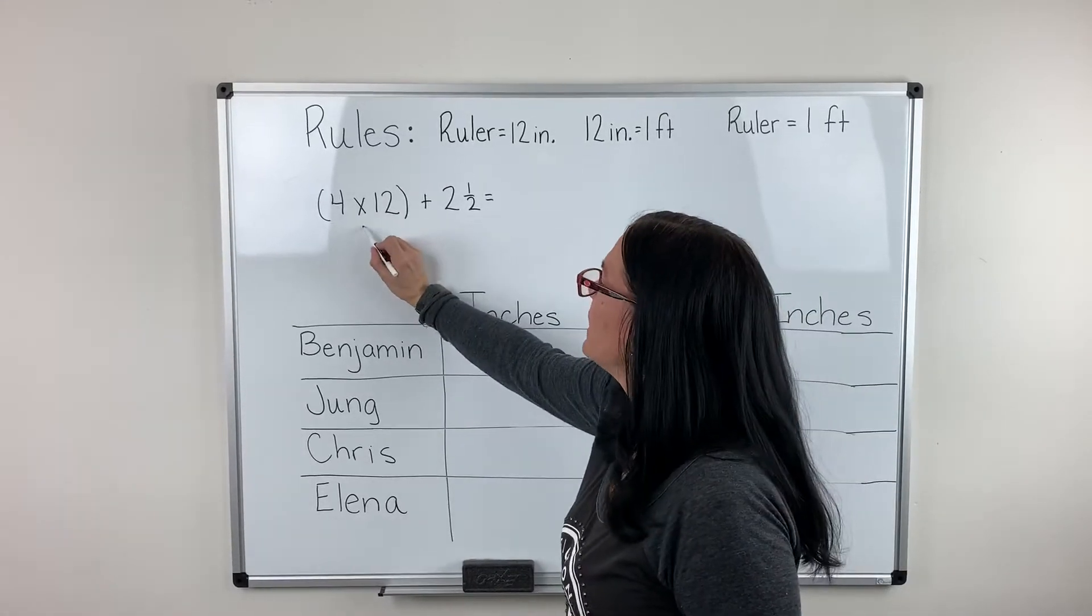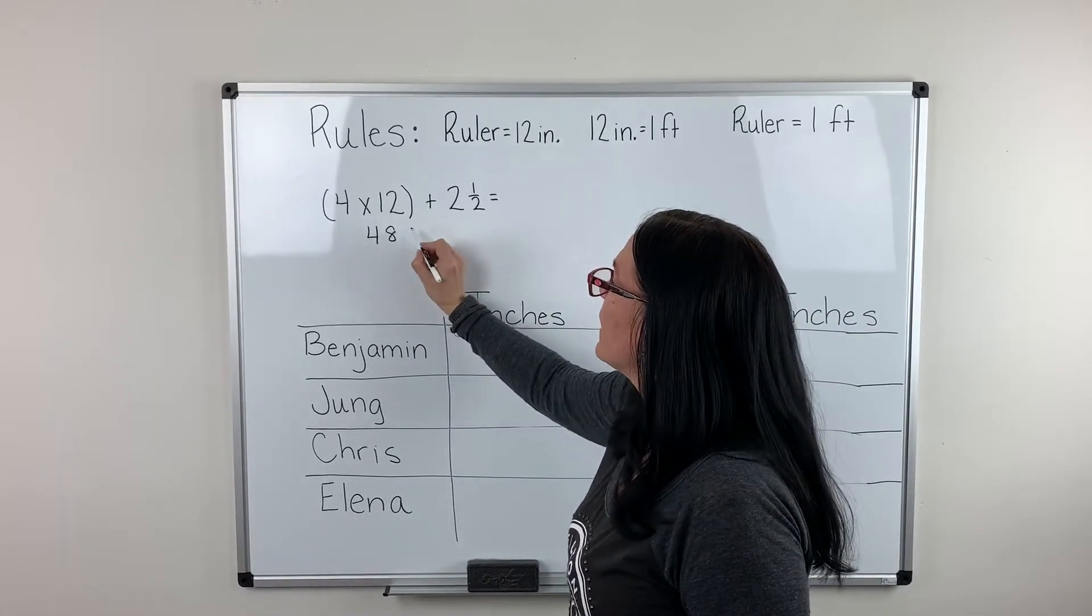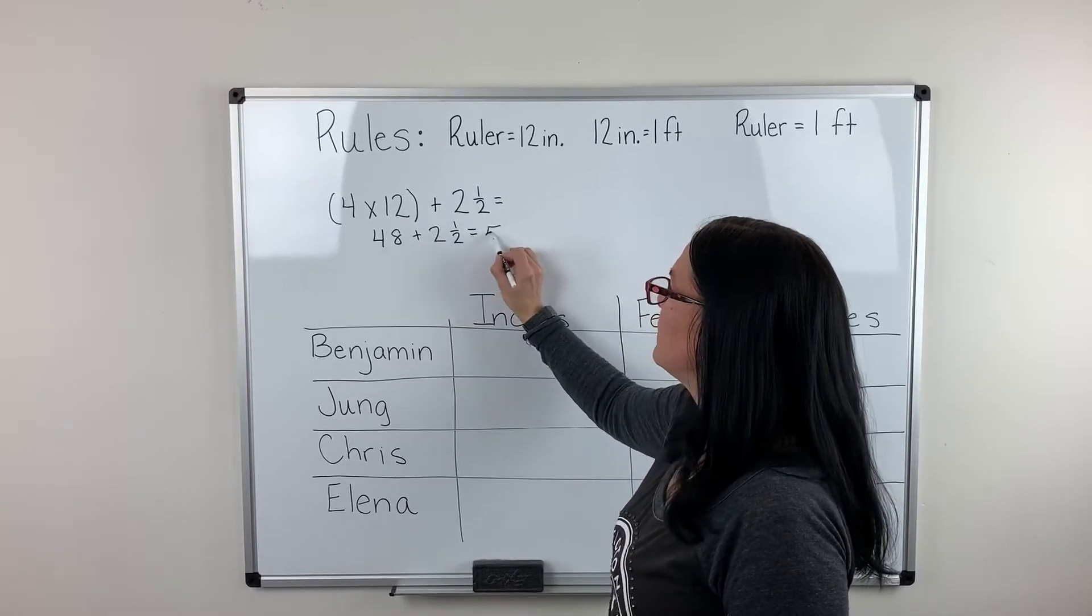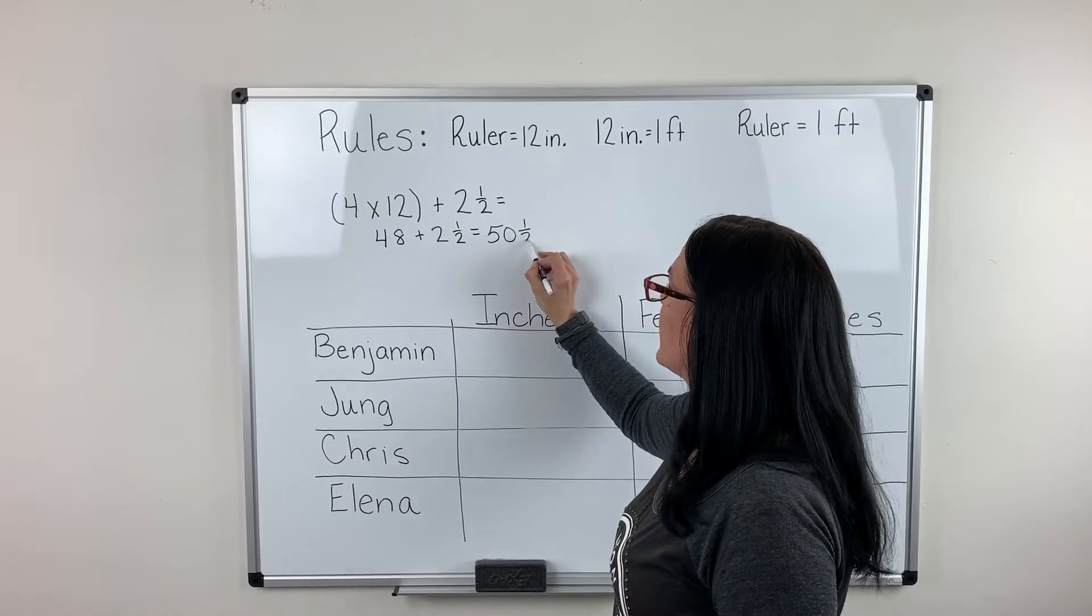I know that four times 12 is 48, and then I'm going to add the two and a half more inches, which gives me 50 and one half inches.